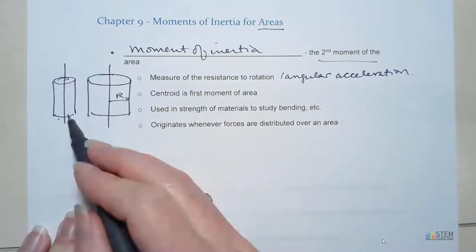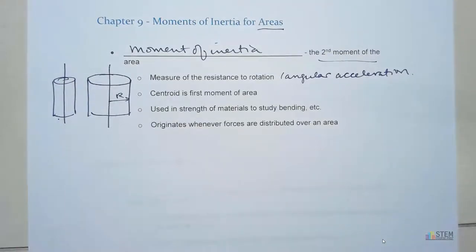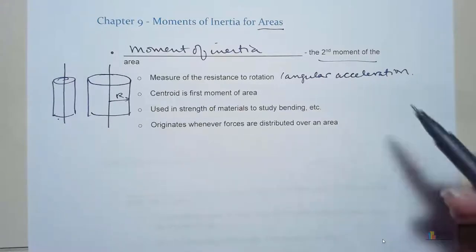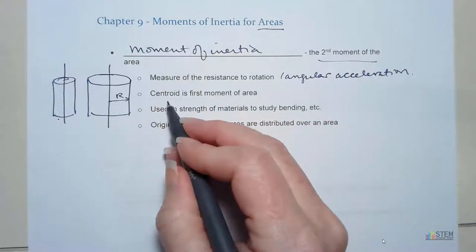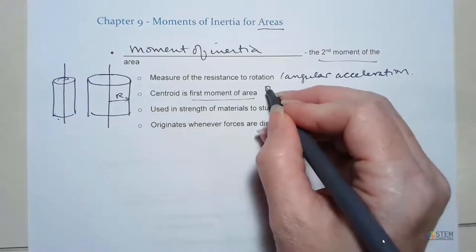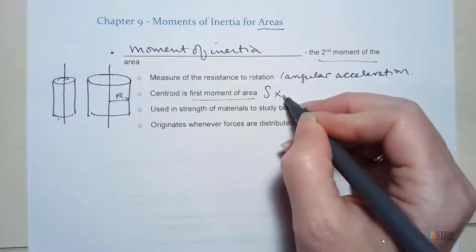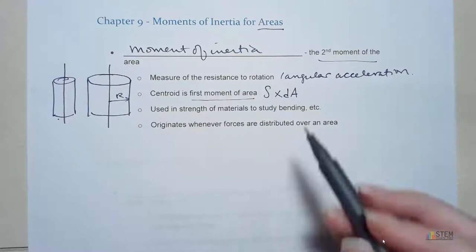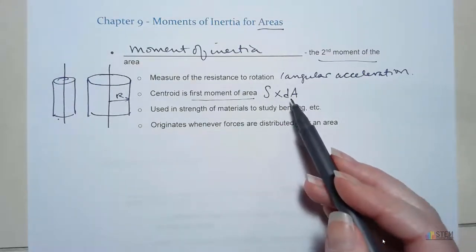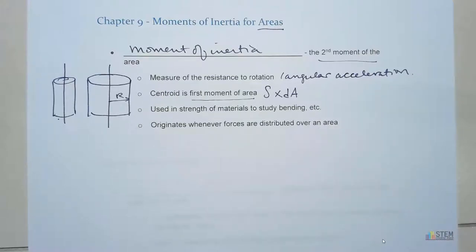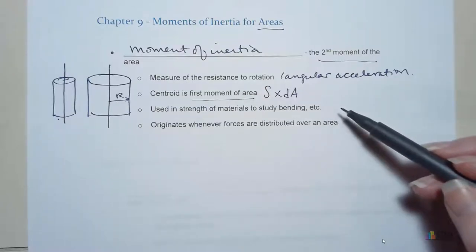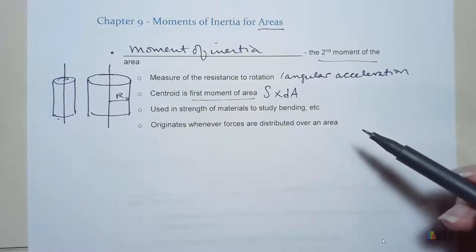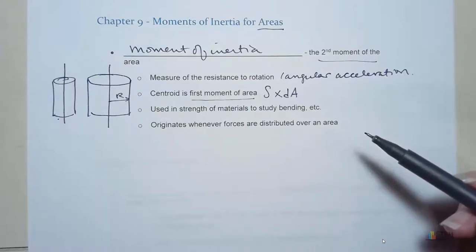So moment of inertia is just going to give you a measure of the resistance to that rotation about a certain axis. It's called the second moment of the area — you'll see why when we get to the equation. You might not have known it, but the centroid is the first moment of area. If you look at the equation, we have the integral of x times dA. If you think of x as being a moment arm, then this is the first moment of area, because dA represents an area. Moments of inertia will be used in strength of materials — you'll use it when studying bending and several other topics.